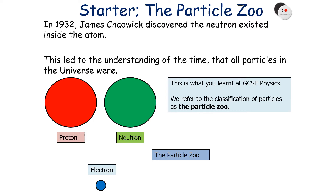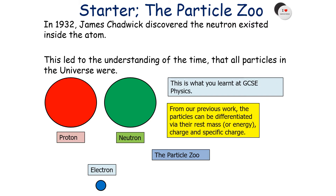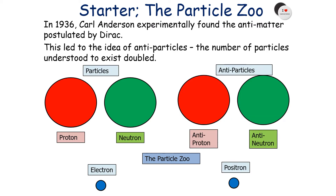We refer to the classifications of particles as the particle zoo. From our previous work, we know that these particles can be differentiated via their rest mass, their rest energy, their charge, and their specific charge. But in 1936, Carl Anderson experimentally found antimatter, which had been postulated by Paul Dirac, and this led to the idea of antiparticles.